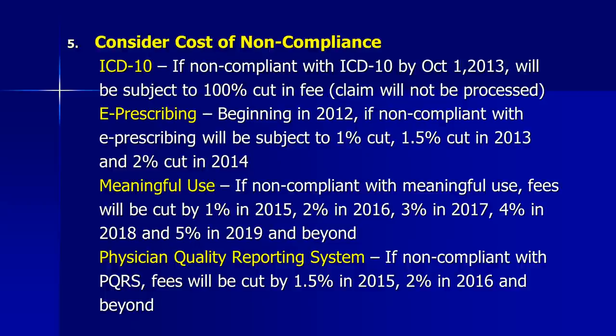You also need to consider the cost of non-compliance if you remain in the program. ICD-10: if non-compliant by October 1, 2013, claims will not be processed — a 100% cut in fees. E-prescribing: non-compliance means a 1% cut in 2012, 1.5% in 2013, and 2% in 2014. Meaningful use: non-compliance triggers cuts of 1% in 2015, 2% in 2016, 3% in 2017, 4% in 2018, and 5% in 2019 and beyond. Physician Quality Reporting System (PQRS): non-compliance means a 1.5% cut in 2015 and 2% in 2016 and beyond.